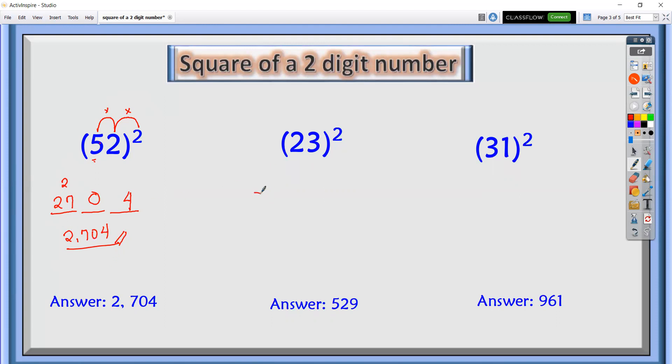Next, 23 squared. Let's draw three lines again. Square now the last number, 3 squared is 9. Multiply 2 times 3, it's 6, times 2, it's 12. Write 2, carry 1. Square now the first number, 2 squared is 4, plus 1, it's 5. So we got 529.